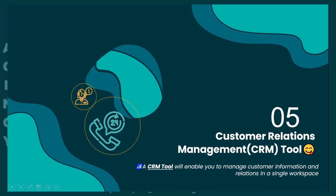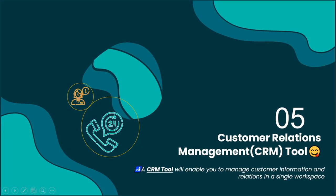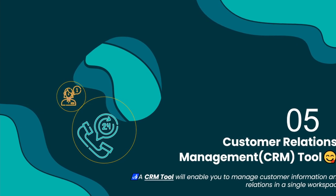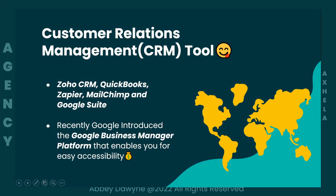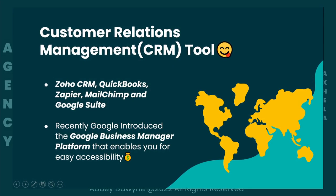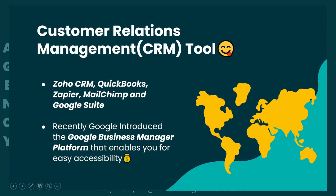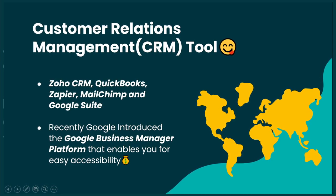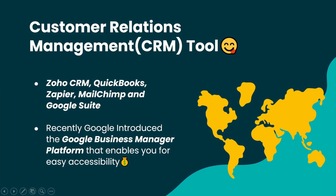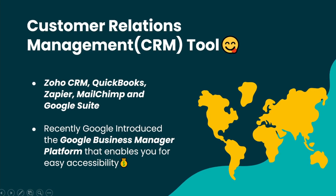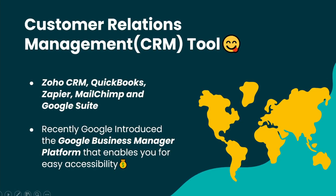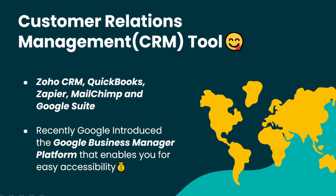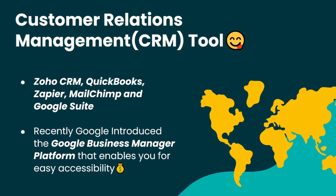The fifth tool is a Customer Relationship Management (CRM) tool. A CRM enables you to manage customer information and relations in a single workspace — track orders, sales, feedback, and all marketing activities. Tools like Zoho CRM, QuickBooks, Zapier, Mailchimp, and Google Suite are available. Google recently introduced Google Business Manager, which enables customers to easily contact you, make orders, and give feedback to help you make better decisions.